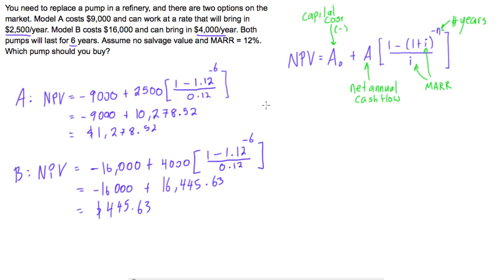If you were thinking about using payback period, pump A's payback period is between three and four years, while pump B's is exactly four years. But there's not really any point in doing that because it's not a strong argument — and pump A would win by payback period anyway. In the next video we'll go over mutually exclusive projects that don't have the same life cycle. Pump A was the winner.